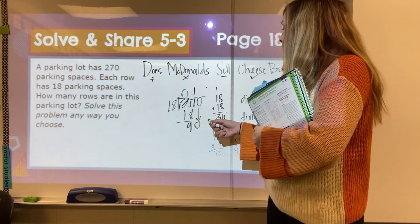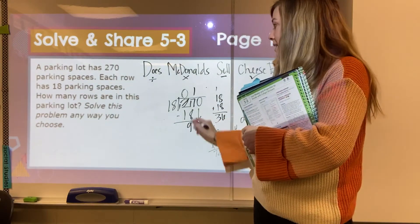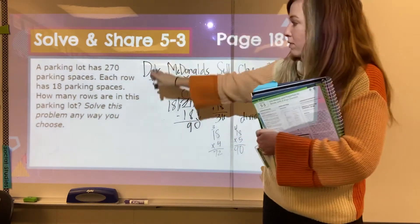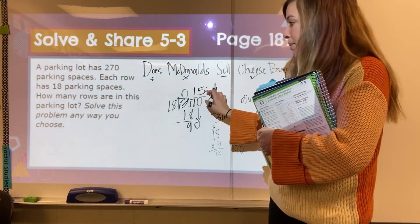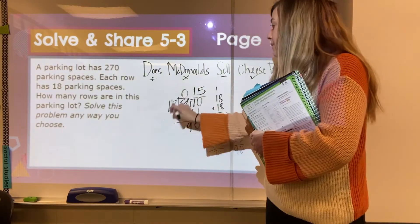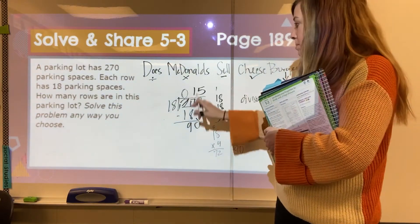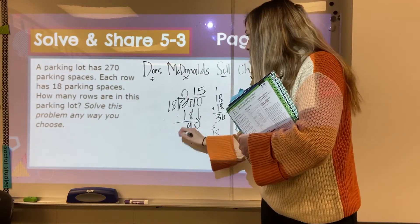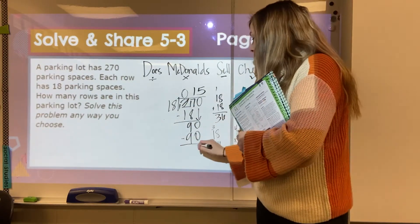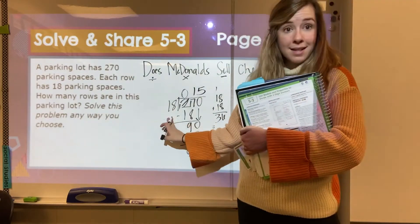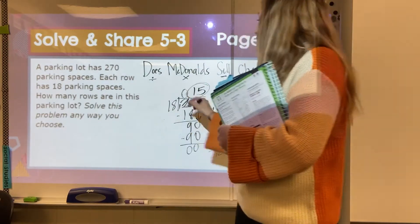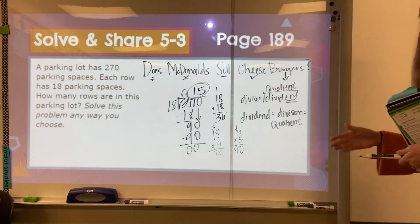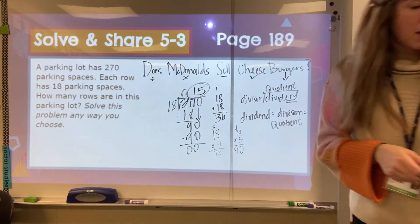So 18 goes, divides into 90. So we're starting back over. Divide it. 18 into 90. 5 times. Remember, we put that up with our quotient. 18 times 5 for our multiply is 90. We already did that work. Sell. Subtract. Check. Is 0 less than 18? Yep. Then we're good to go. So it has 15 rows. Our quotient is our answer in the parking lot.